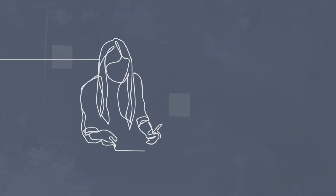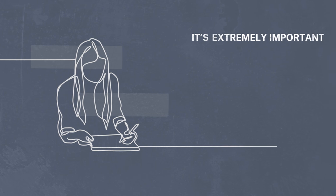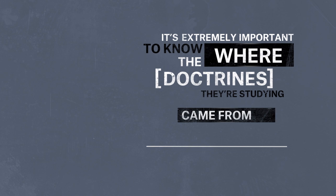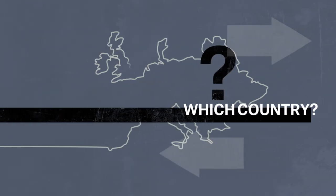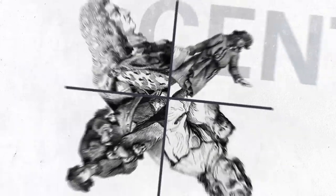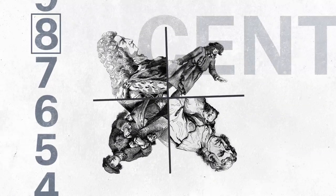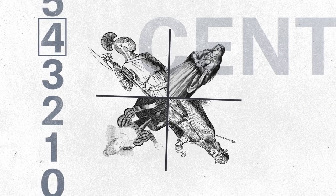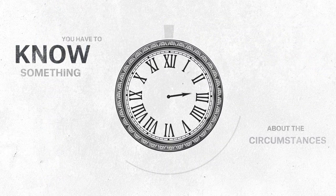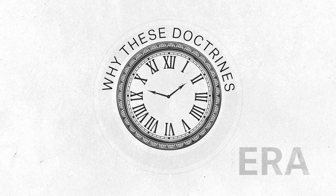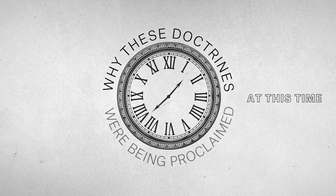For students of economics, it's extremely important to know where the doctrines they're studying came from, which country, which place, and which time. Scientific economics rose in the 18th century. Why in the 18th century? Why not in the 14th century? It was located in a particular era, and you have to know something about the circumstances of that era in order to understand why these doctrines were being proclaimed at this time.